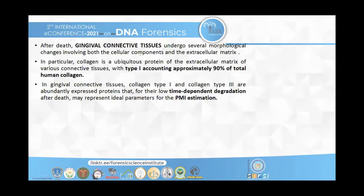Gingival connective tissue undergoes several morphological changes involving both cellular components and extracellular matrix. Particularly, collagen type 1 is present more in gingival connective tissue — it is 90% of the total human collagen. As the post-mortem interval exceeds, collagen type 1 degrades.